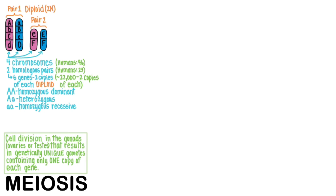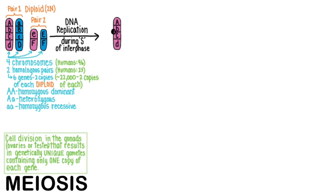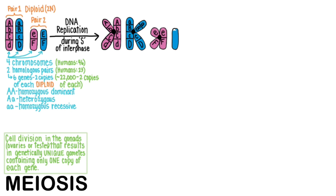And that's what meiosis is all about — splitting each of these gene copies into eggs or sperm. As these cells within the gonads prepare for meiosis, they go through DNA replication in S of interphase, just like all cells do before they divide. And just like you've learned about in mitosis, the identical sister chromatids are held together by the centromere DNA sequence.